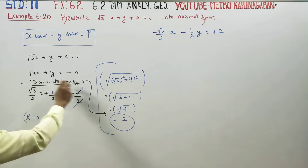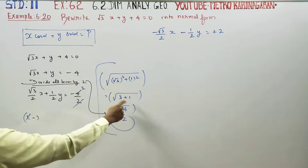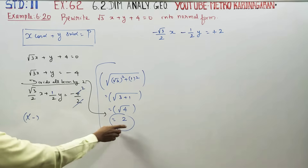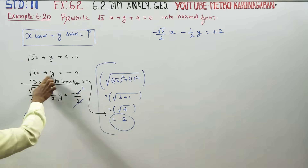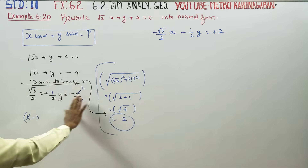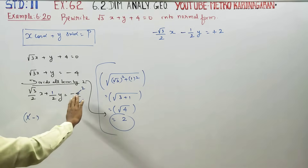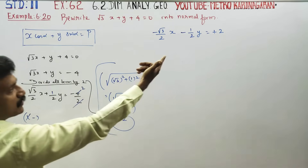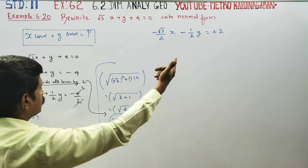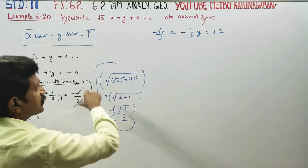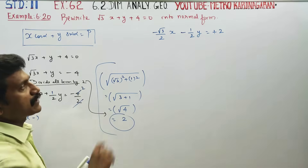Dividing all the terms and ensuring the right-hand side is positive: the negative becomes positive, so the full left-hand side carries the minus sign throughout.